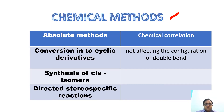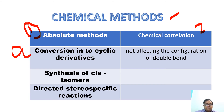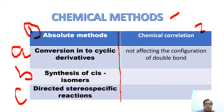After physical methods, we discuss chemical methods. As discussed earlier, chemical methods are of two types: absolute methods and the chemical correlation method. Absolute methods are further classified into conversion into a cyclic derivative, synthesis of a cis isomer, and directed stereospecific reaction. It is important to remember that absolute methods do not maintain the configuration — they destroy it. But in the chemical correlation method, the existing configuration is retained as such.